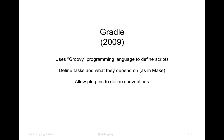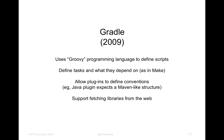Gradle also lets you define plugins. You can have your build config use a library about build configs — for instance, you can use the Java plugin, which knows the Maven-like source structure: source/main/java, source/test/java. It knows the different phases: compiling source code, compiling tests, resolving dependencies, and running tests. We use the Java plugin to make Gradle expect a Maven-like structure.